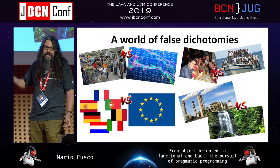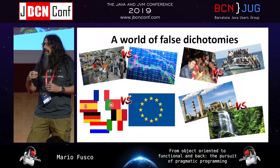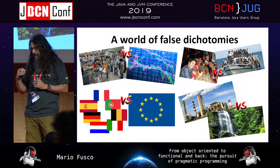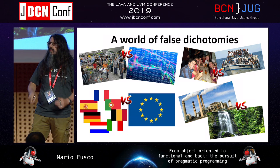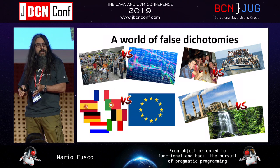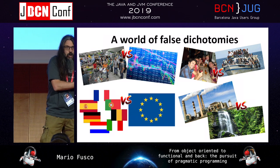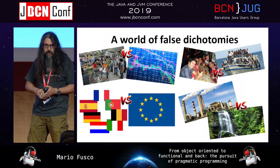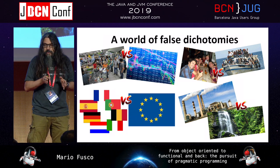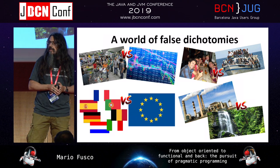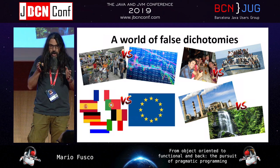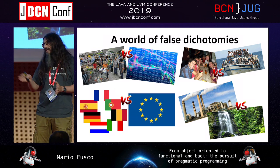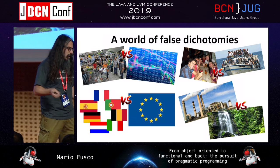And the same thing applies for politics. Why do these dichotomies work on us? Because we are lazy. Our brain is lazy. If somebody tells you you have to choose between A or B, you choose A or B. But you don't need to choose either 100% A or 100% B. It's not all black or white — there are a lot of shades of gray in the middle. And we, as experienced developers and engineers, have to find the right shades of gray for the problem.